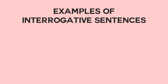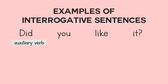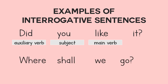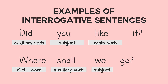Here are more examples of interrogative sentences. Did you like it? Did is the auxiliary verb, you is the subject, and like is the main verb. Another example: where shall we go? Where is the WH word, shall is the auxiliary verb, we is the subject, and go is the main verb.